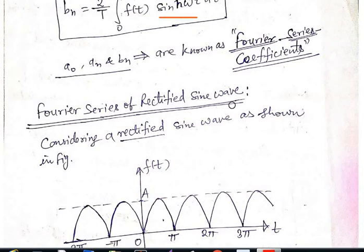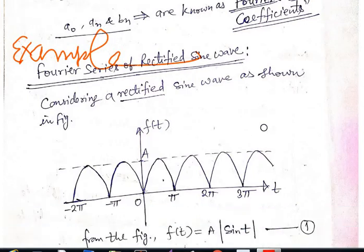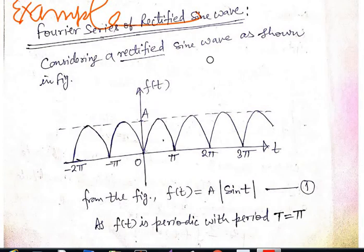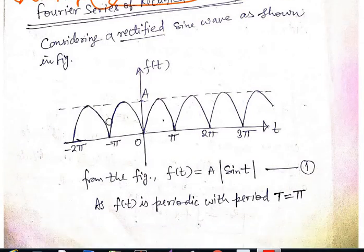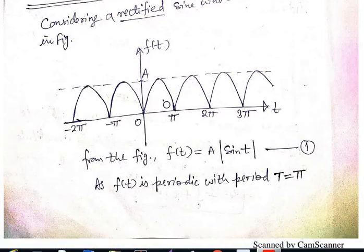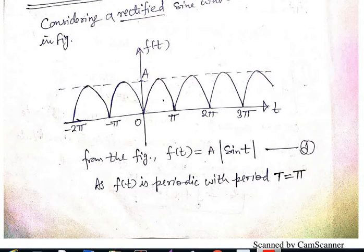Now, Fourier series of a rectified sine wave — here we consider a very popular example. From the diagram you can see the rectified sine wave f(t), whose values lie between zero and A. That's why we call it rectified. So f(t) = A·|sin(t)|, because all values are on the upper side — the waveform does not go towards the negative y-axis, so we use the modulus.